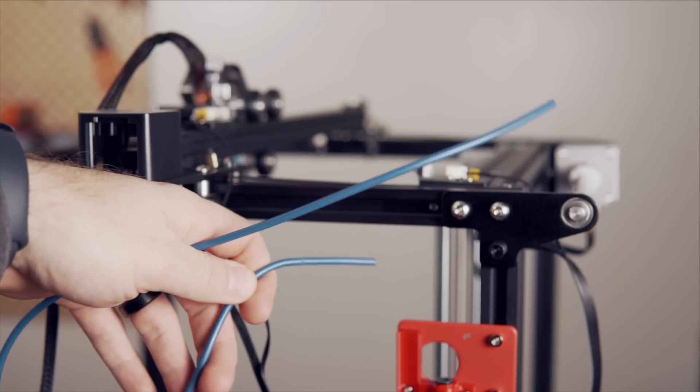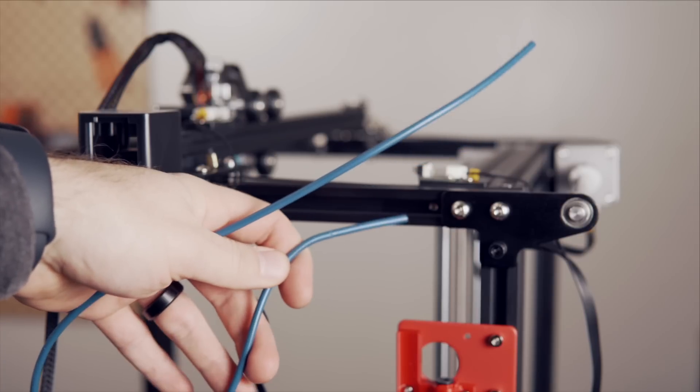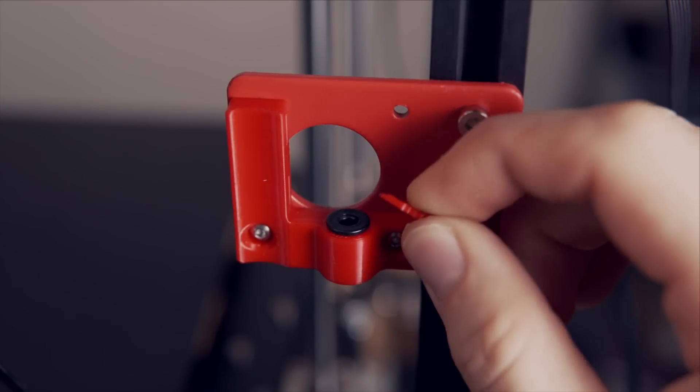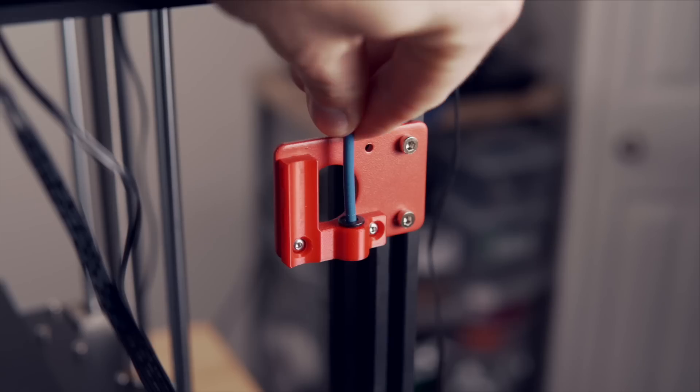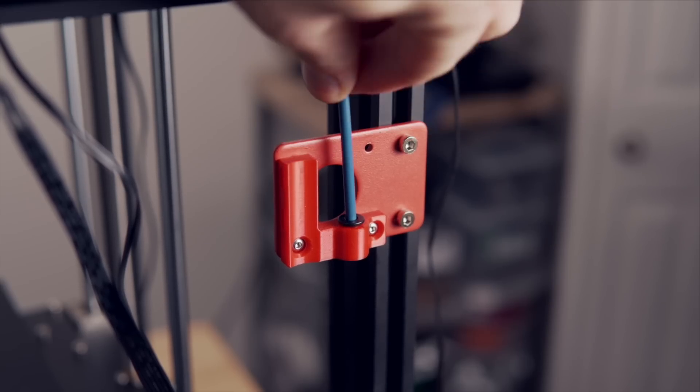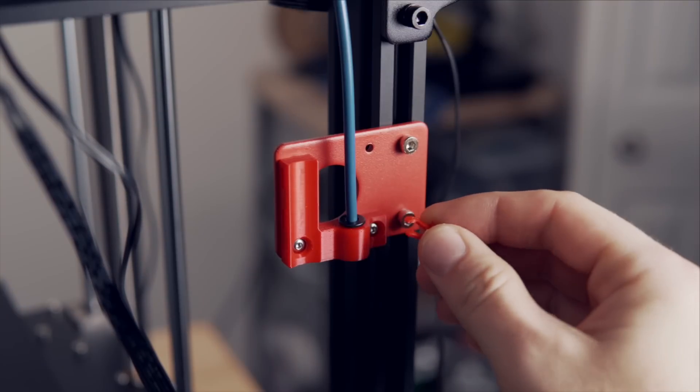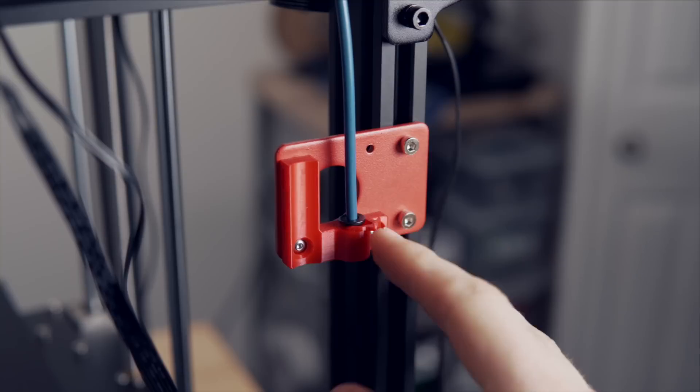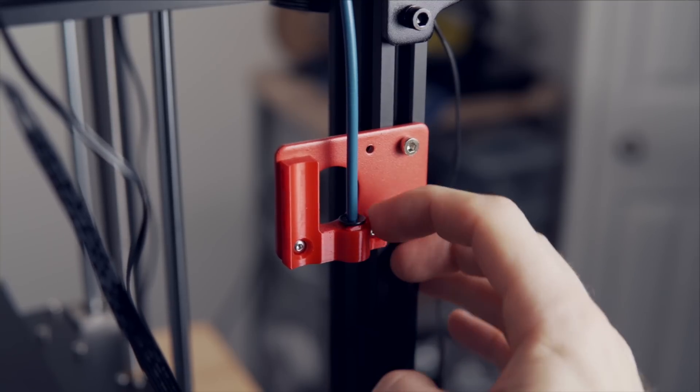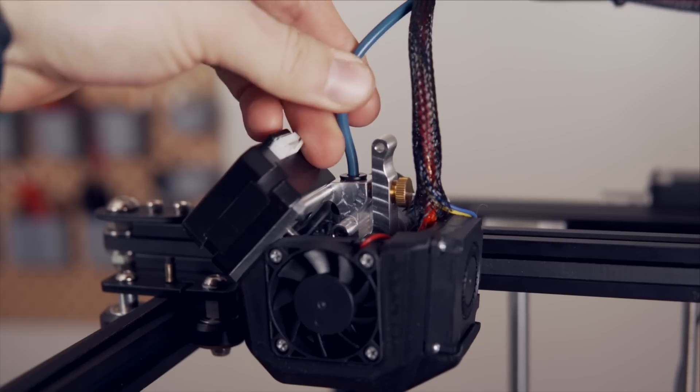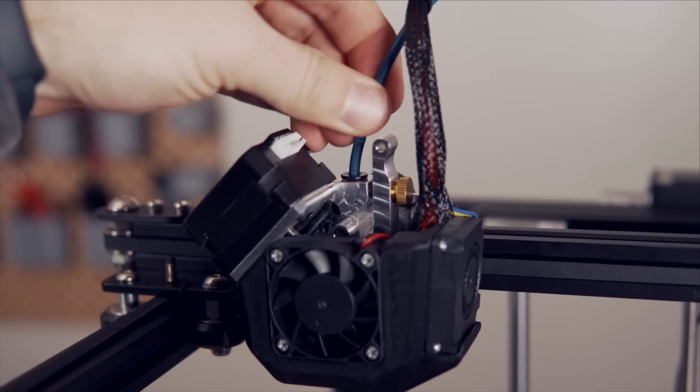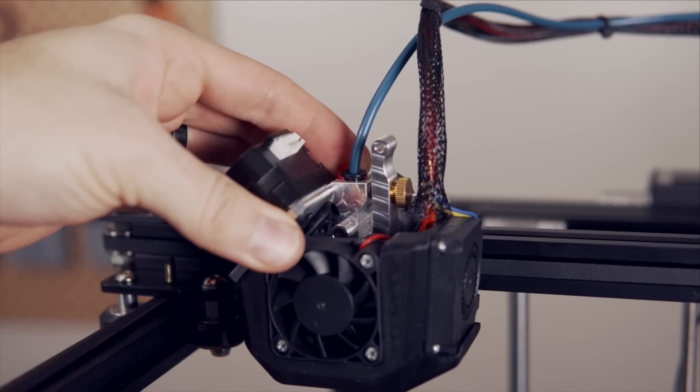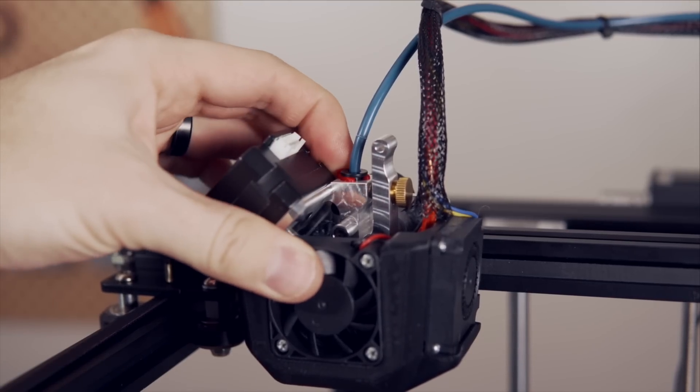Now we're going to be reinstalling our printer's bowden tubing. Start by removing the retention clip on the printed part and then push the bowden tubing all the way into that compression fitting as far as it goes before seating that retention clip between the printed part and the compression fitting. Then install the other end of the bowden tubing into the hotend and make sure you place a retention clip also there just to prevent anything from popping out.